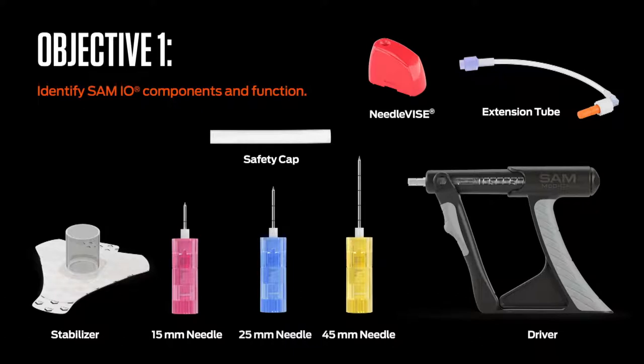Once the needle assembly is properly positioned, the stylet is removed to expose a standard lure lock for extension set connection. With the extension set connected, aspiration verification, flushing, and selected treatments may commence. Note the various components supplied by the I.O. access system are depicted in this illustration.